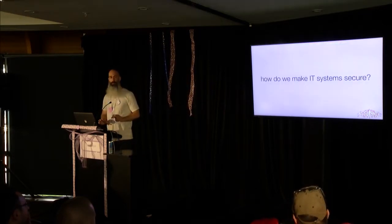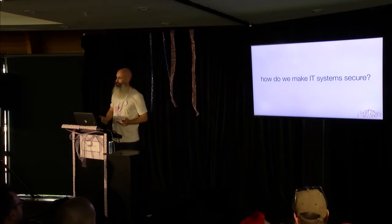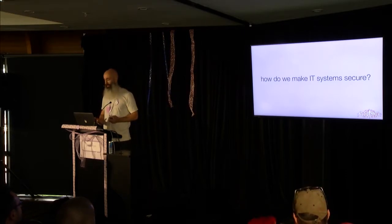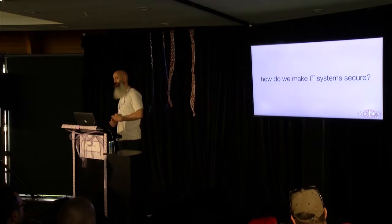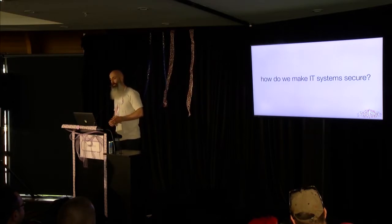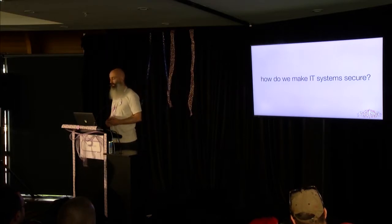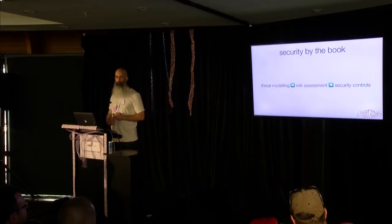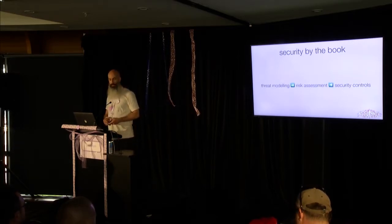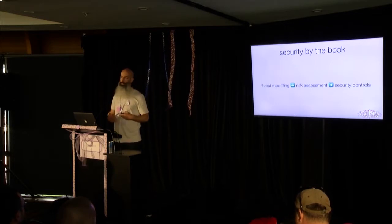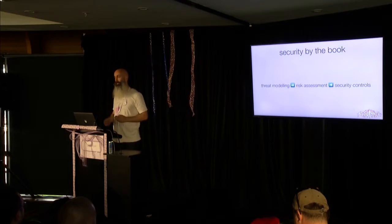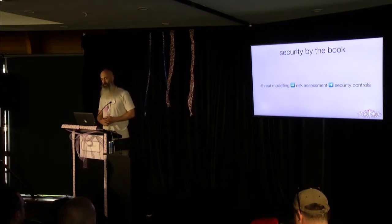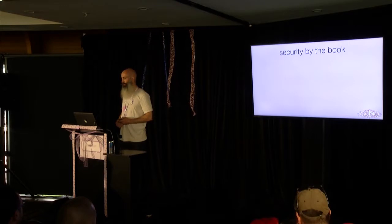So let's very briefly talk about IT and security. How do we make things secure? Well, there's a lot of different approaches. One of the more established ones is we go through a series of processes. We do some threat modeling, we do risk assessment, and then we implement security controls. This is the academic theoretical approach — it's not always necessarily approached this way. So what do these words mean?